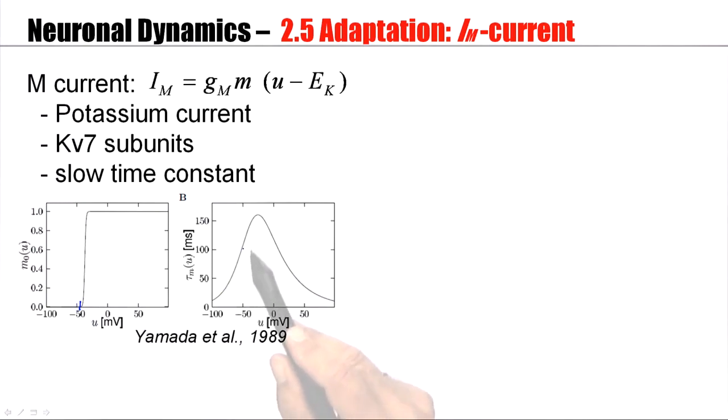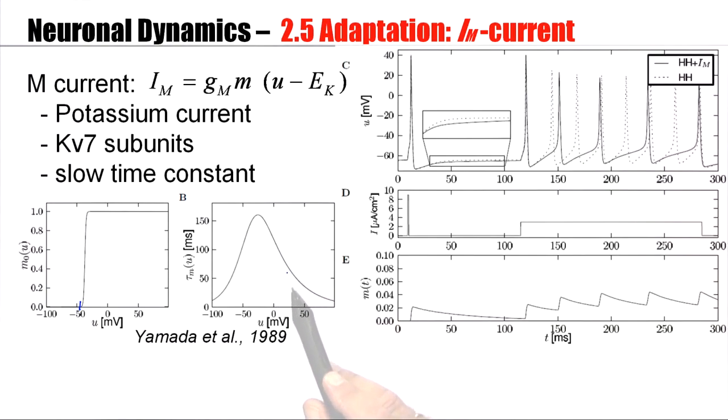But then, because of the slow time constant, it accumulates. So, we give here a first pulse, then we give a step current, and you see that this variable m accumulates. It increases to higher and higher values.